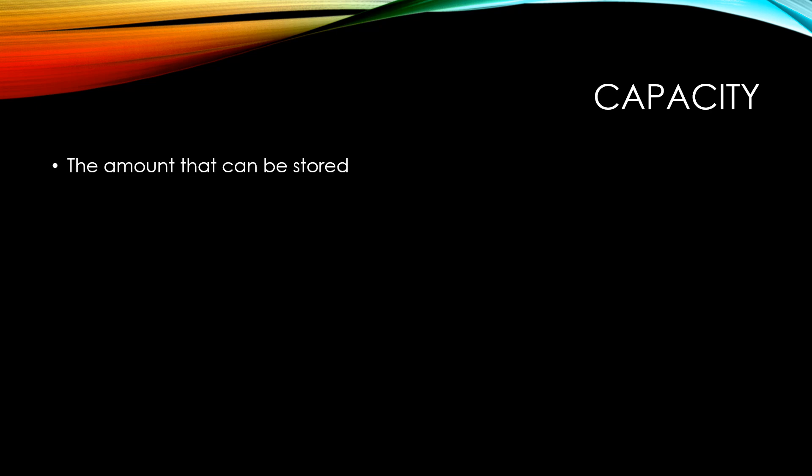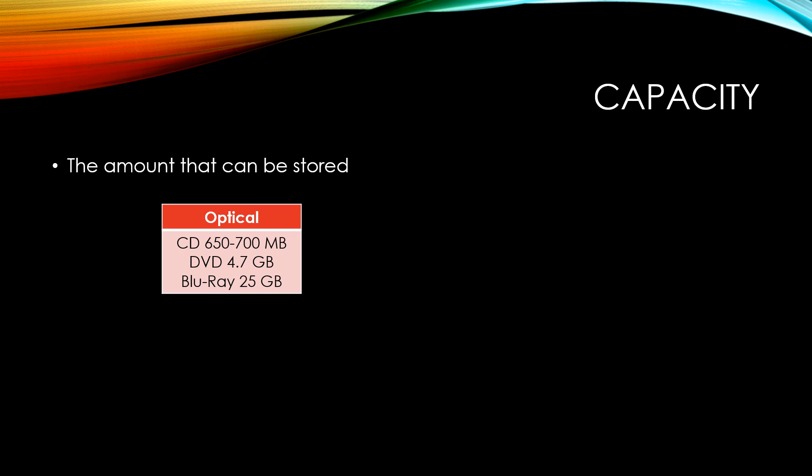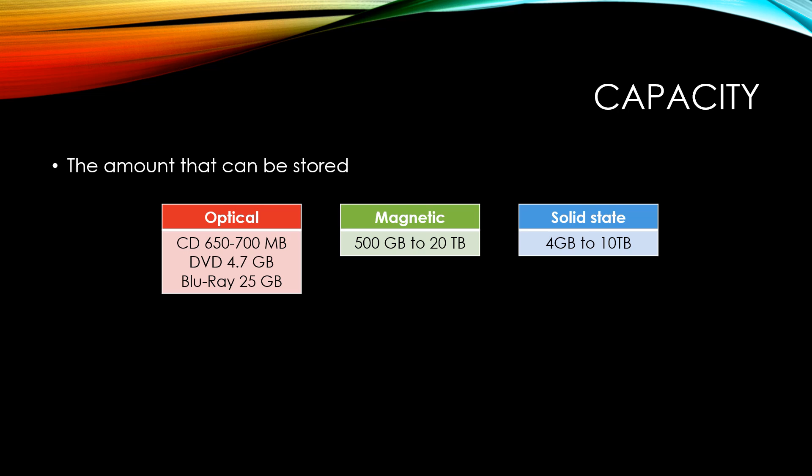Capacity refers to the amount that can be stored. With optical storage, CDs can hold 650 to 700 megabytes, DVDs 4.7 gigabytes, and Blu-rays about 25 gigabytes. Magnetic hard disk drives range from about 500 gigabytes up to 20 terabytes. Solid state storage ranges from about 4 gigabytes on a USB stick up to a maximum of about 10 terabytes on an SSD drive.